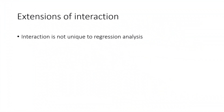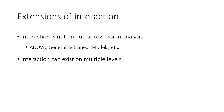Some final remarks on extensions of interaction. As mentioned, interaction is not unique to regression analysis — you can use it in all types of analyses, for instance ANOVA, generalized linear models, and more. It can also exist on multiple levels, not just the individual level. Finally, interaction can exist between more than just two variables — it can involve three, four, or even more. For simplicity, we looked at two variables here, but maybe someday we'll have a video covering multiple variables. In the next video, we'll have a practical guide on how to analyze interaction within SPSS. Thanks for watching.